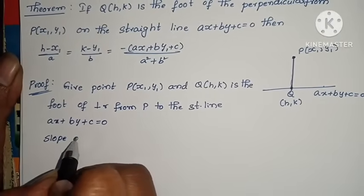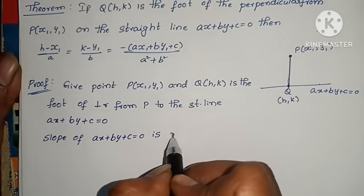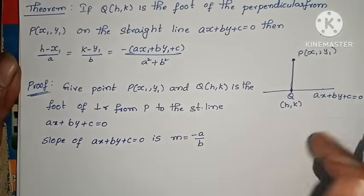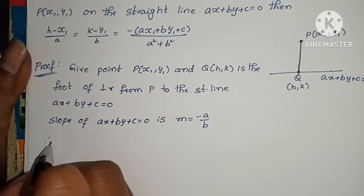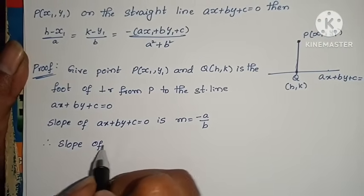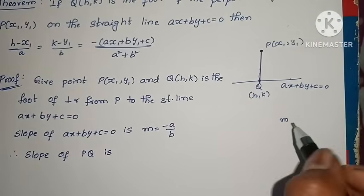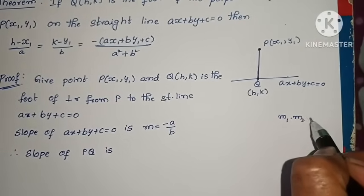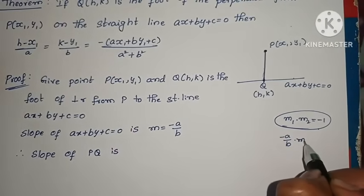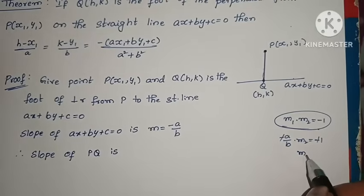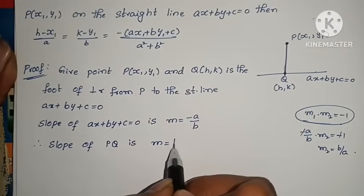Slope of ax plus by plus c equals to 0 is m equals to minus a by b. Now PQ is perpendicular to this line, so slope of PQ — since the product of slopes of two perpendicular lines equals minus 1 — if m₁ is minus a by b, then m₂ equals b by a. So slope of PQ is m equals to b by a.